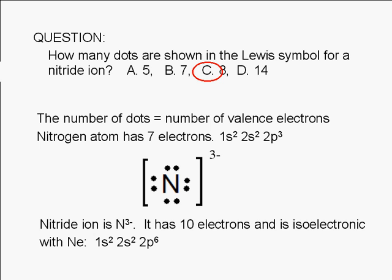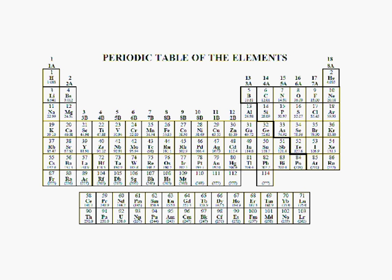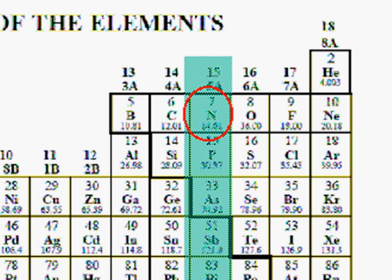We can easily figure out the answer to this question by referring to the periodic table. The elements are arranged so that the group number is equal to the number of valence electrons. We can see that nitrogen belongs to group 5A. Therefore, a nitrogen atom has five valence electrons. The same is true for phosphorus and other members of this group.